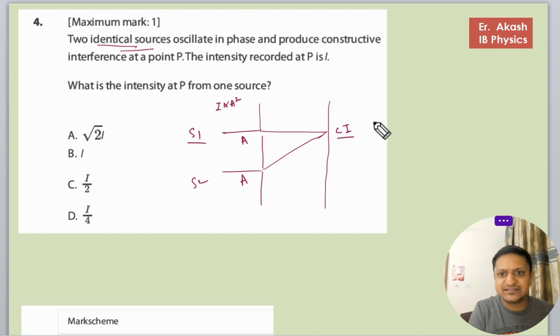Here the amplitude will become A plus A equals 2A. So the amplitude, sorry, amplitude will become A plus A, 2A. So for this case...